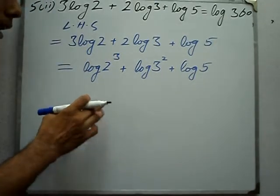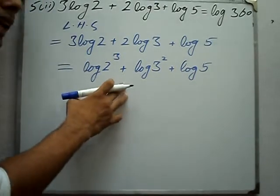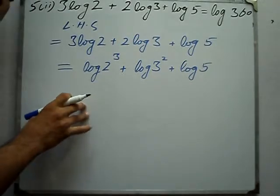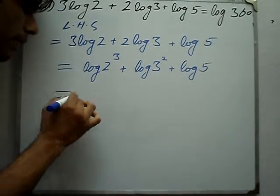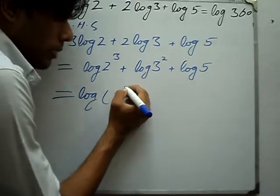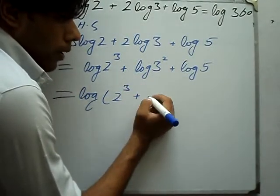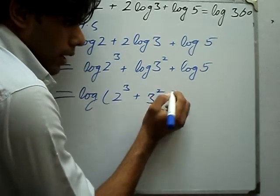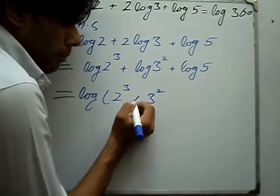Now we simplify. Next property applied. Log 2 cubed: 2 to the power 3 is 8. Log 3 squared plus log 5, multiplying the terms together.